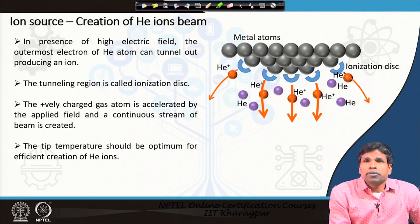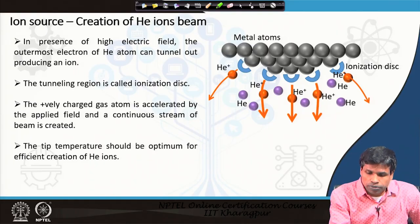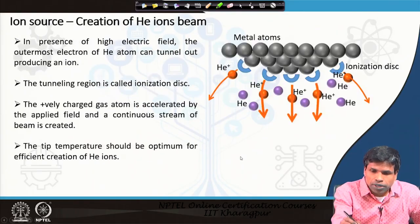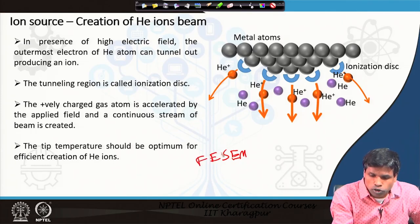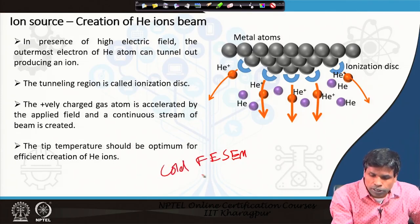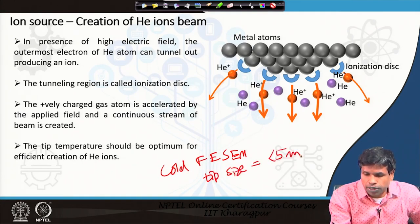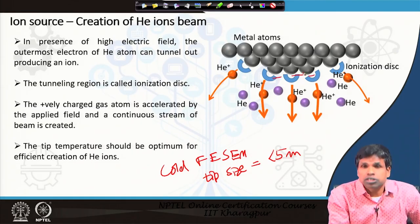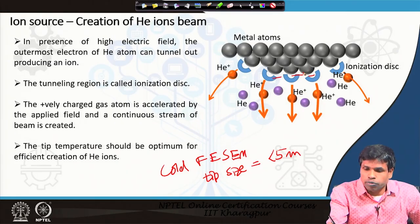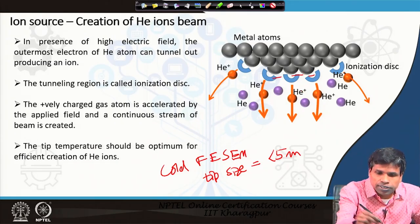Unlike the scanning electron microscope where the tip size in field emission SEM is around 5 nanometers, in the helium ion microscope we have only 3 atoms at the tip. This is a much smaller effective tip size, and therefore the beam will be much finer in this case.